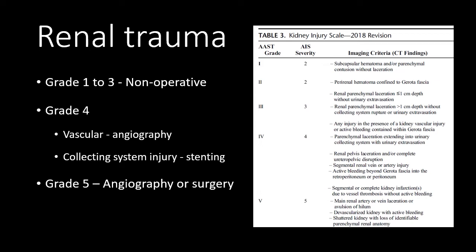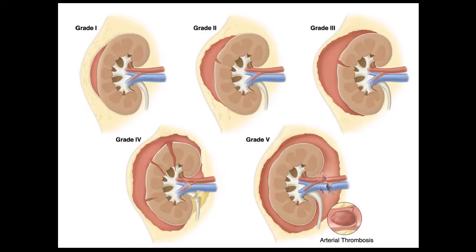Grade four injuries are often going to require some form of angiography to stop bleeding, or may require some intervention within the urinary tract to address a collecting system injury. Grade five injuries tend to be extremely traumatic injuries causing substantial vascular damage or large volume bleeding, and are often going to require angiography or surgery.